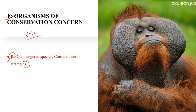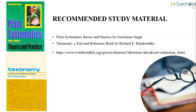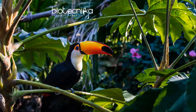As you can see, the 6 subunits of Unit 9 are not very difficult and only a few topics are very important from an exam point of view. For study material, you can refer to Plant Systematics: Theory and Practice by Gurcharan Singh, Taxonomy: A Text and Reference Book by Richard E. Blackwelder, and a specific link to study endangered, critically endangered, extinct, or extinct-in-the-wild species. I hope you find this video useful. Thank you.